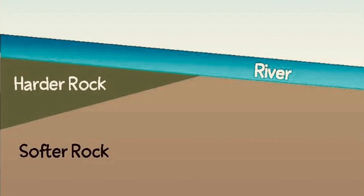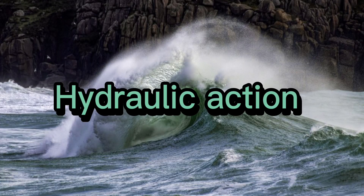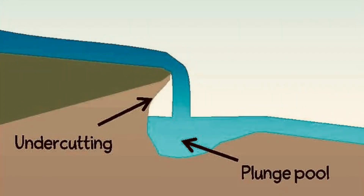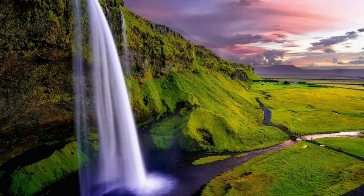It all starts with a river running over a layer of hard rock and a layer of soft rock. A type of erosion called hydraulic action tears the softer rock away. Eventually this creates a river rapid, which then grows into a waterfall.